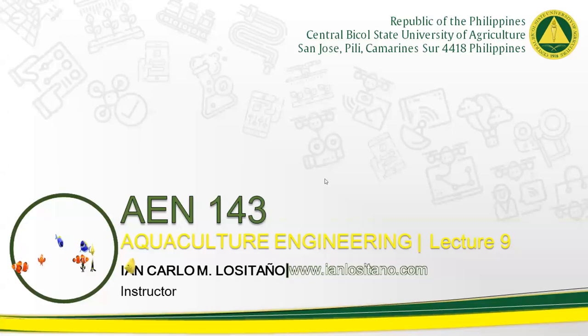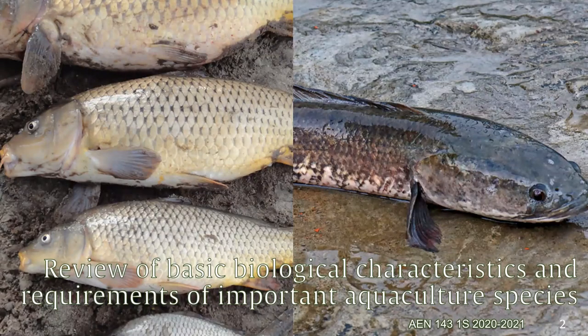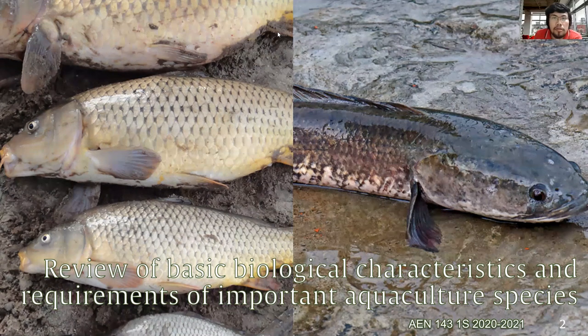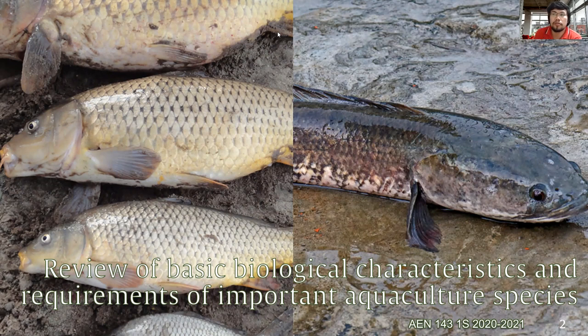Welcome back to lecture 9 of aquaculture engineering. This will be a review of another important aquaculture species: carps. At the end of this lecture you should be able to understand the characteristics and production cycles of the common carp, learn the variety selection criteria in its production, and identify the environmental and water quality requirements of its production.